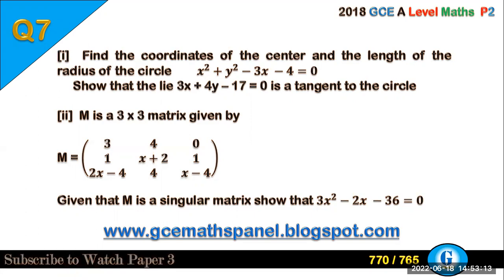Part two: M is a 3 by 3 matrix given by M equals that given matrix. Given that M is a singular matrix, show that 3x squared minus 2x minus 36 equals 0.